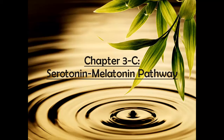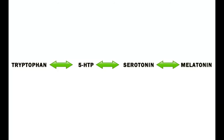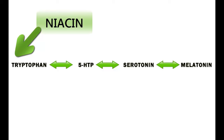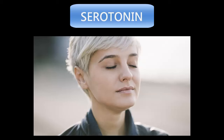Serotonin-melatonin pathway. Serotonin is manufactured from the base amino acid tryptophan. Tryptophan is allowed to cross the blood-brain barrier and then convert into 5-HTP. 5-HTP is then converted into serotonin, and serotonin can be further converted into melatonin. Usually, when a person is trying to naturally boost serotonin, they take either tryptophan or 5-HTP to do so.